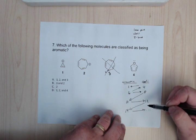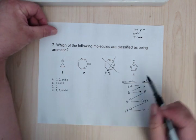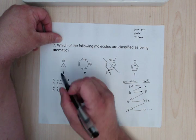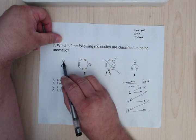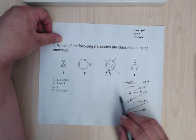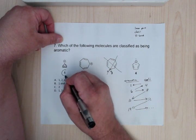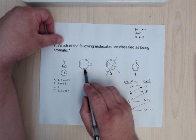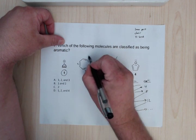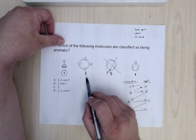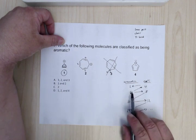So for here, we have two pi electrons right here. This one has a charge, so it satisfies that. So two is aromatic, so this is going to be aromatic. Here, we have 2, 4, 6. And we have a charge here, so we're good.